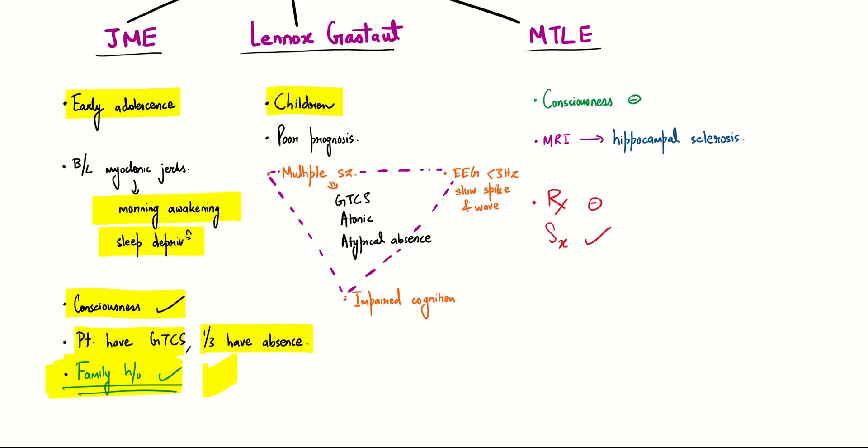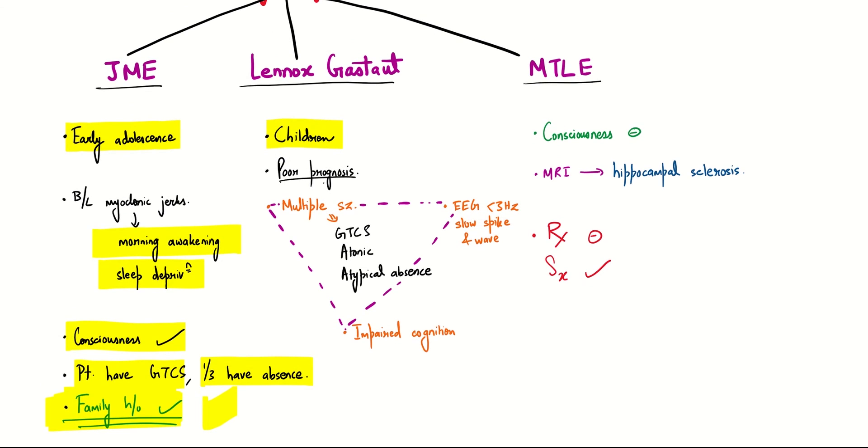Lennox-Gastaut has a very poor prognosis, mainly because of a triad consisting of multiple seizures: GTCS, atonic, and atypical absence seizure. EEG of less than 3 Hz frequency will be seen with a slow spike and wave pattern, and impaired cognition. This forms the triad of Lennox-Gastaut syndrome.